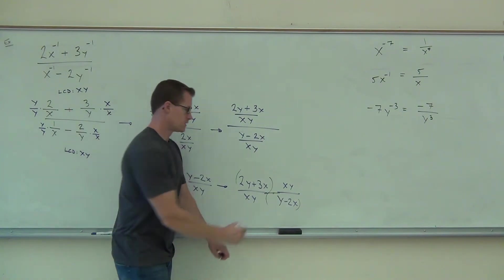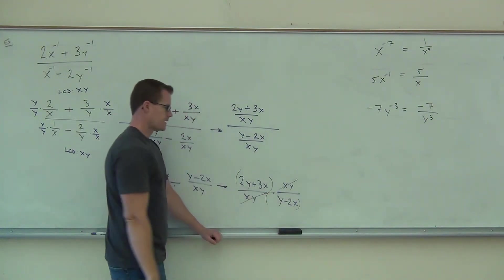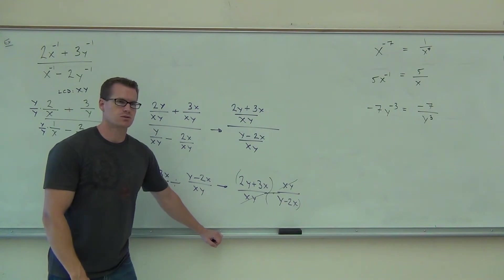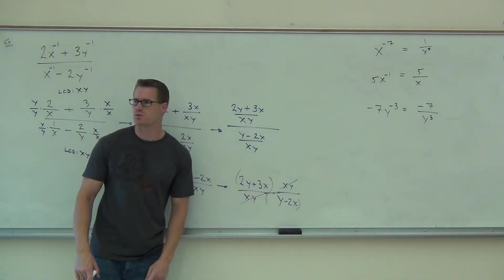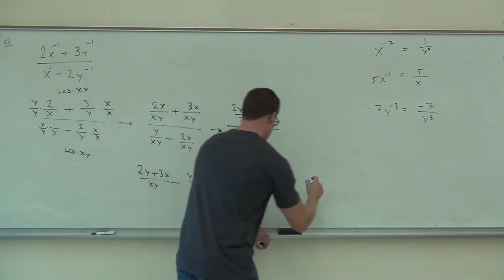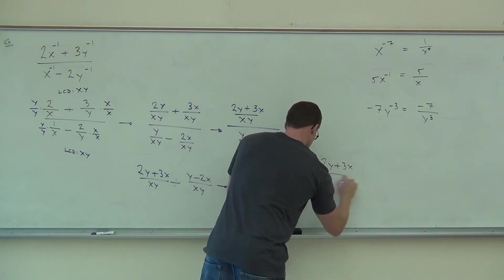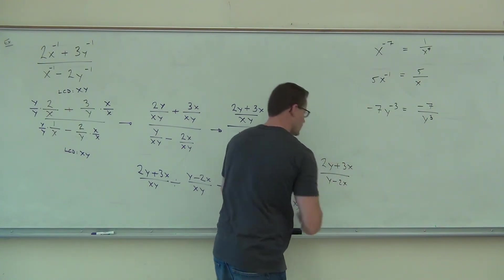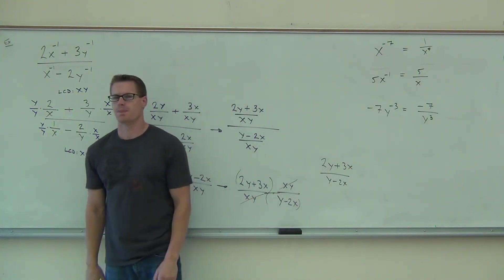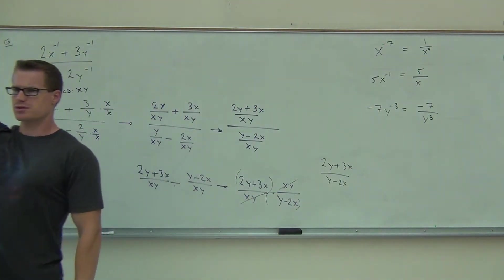Do you see anything that will simplify? That's fine. That's great. Those are gone. Can I simplify anything else? No. That's not factorable. That's not factorable. That's our answer. So we're going to write 2y plus 3x over y minus 2x, and we're done. How many people feel okay with this type of problem?